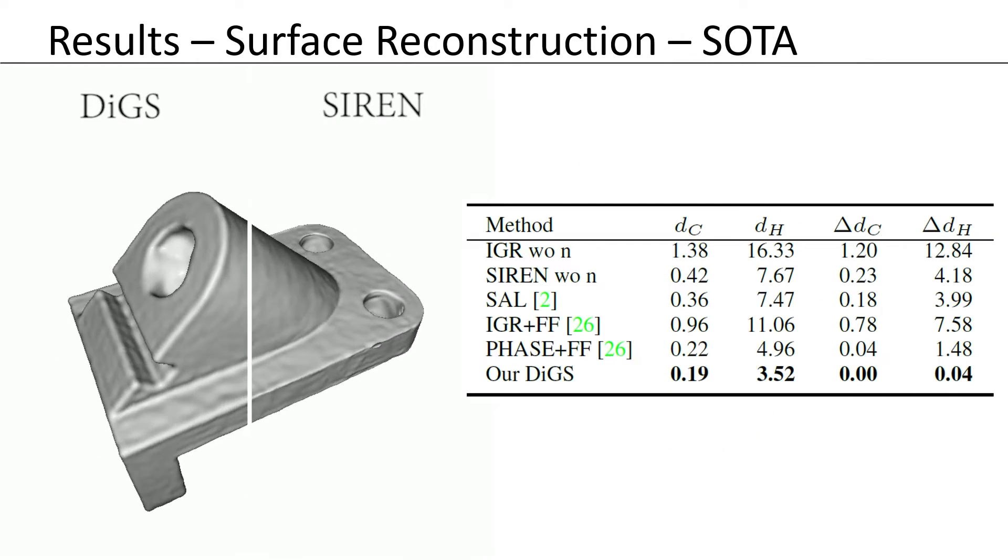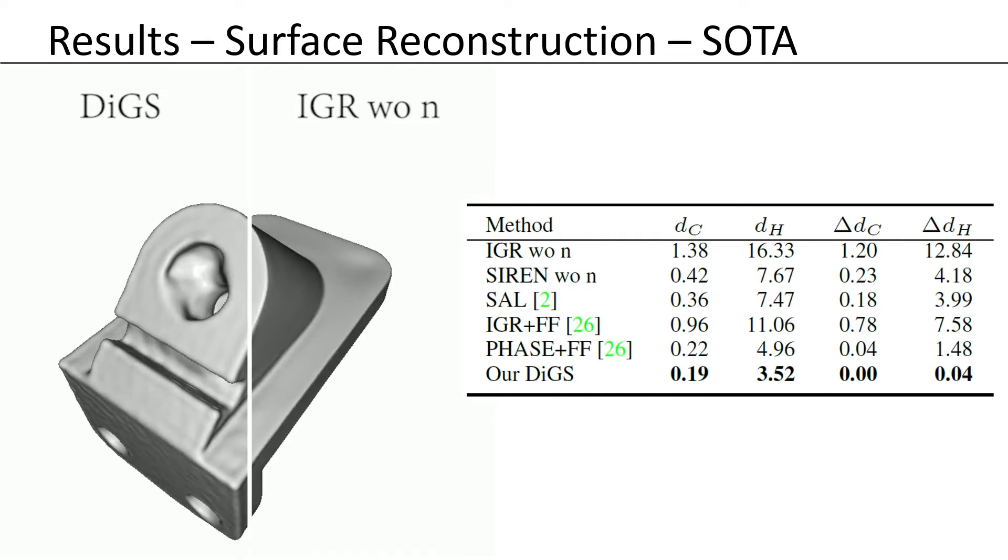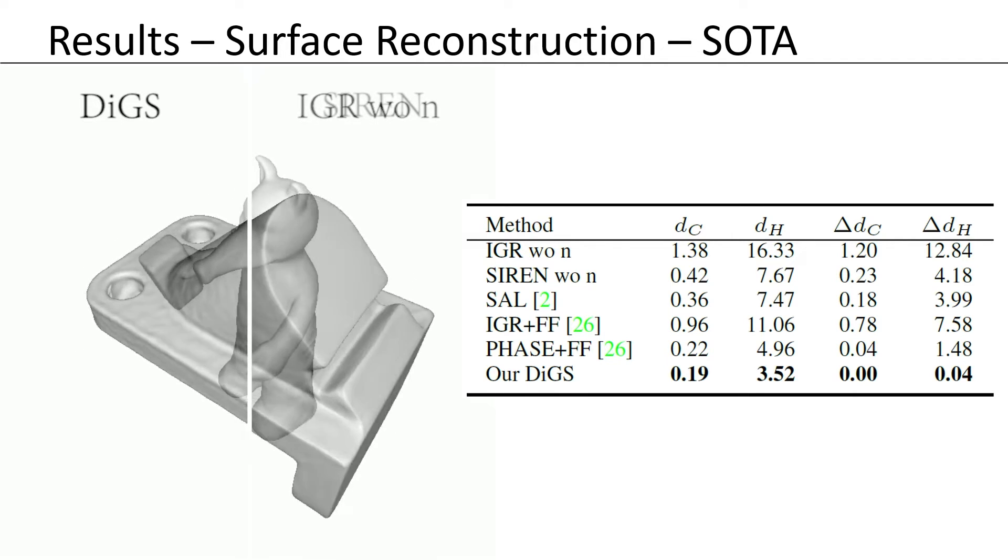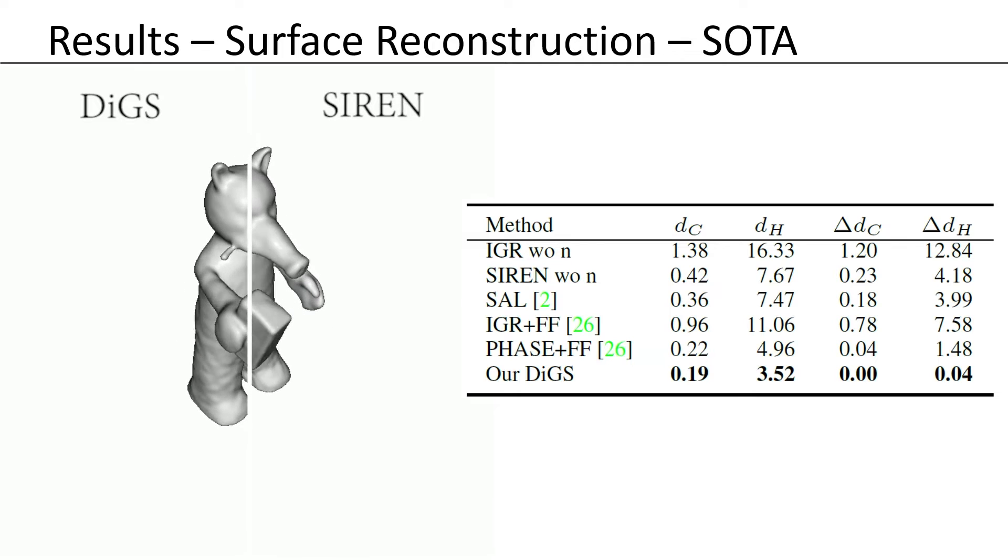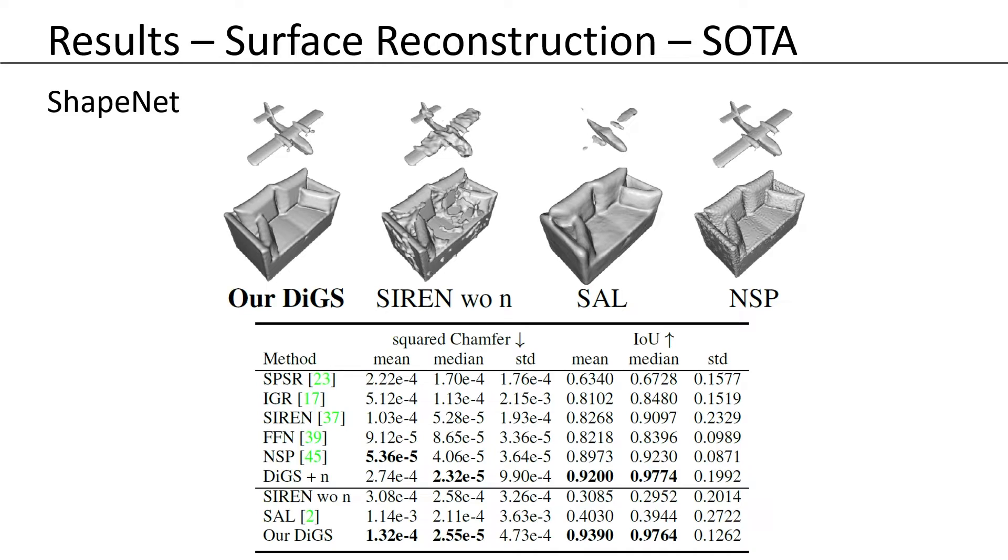We evaluate the performance of our approach on the SRB dataset for the task of surface reconstruction and show that without normal vectors for supervision, DIGS outperforms other methods that do not use normals for supervision using the Chamfer distance and Hausdorff distance evaluation measures. We also evaluate the performance of our approach on a subset of the ShapeNet dataset and show that without normal vectors for supervision, DIGS outperforms other methods.